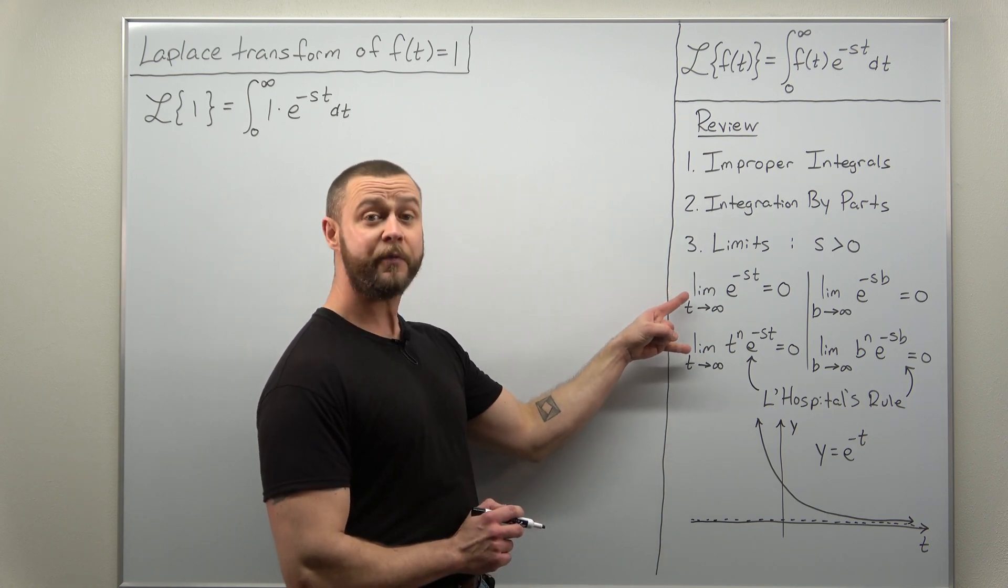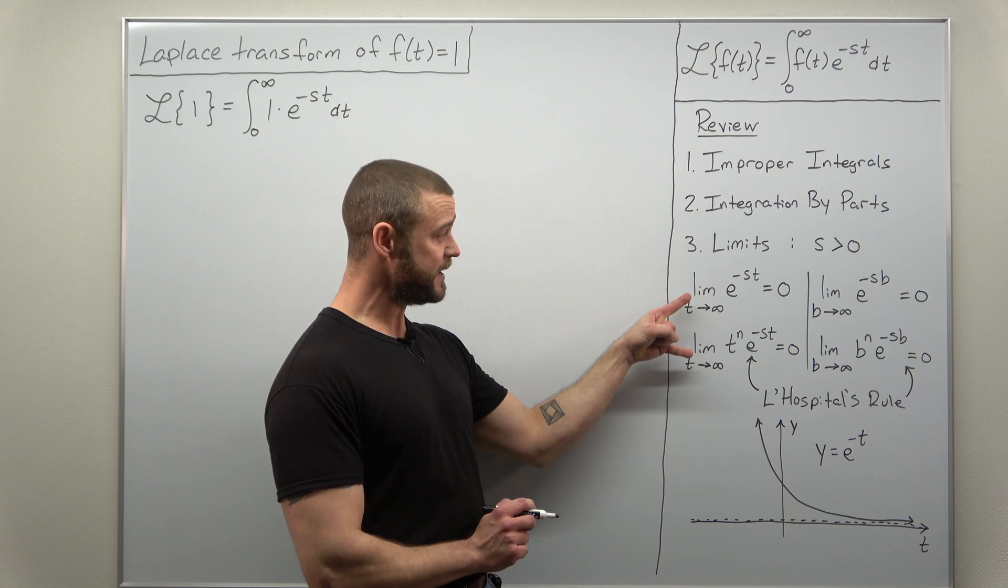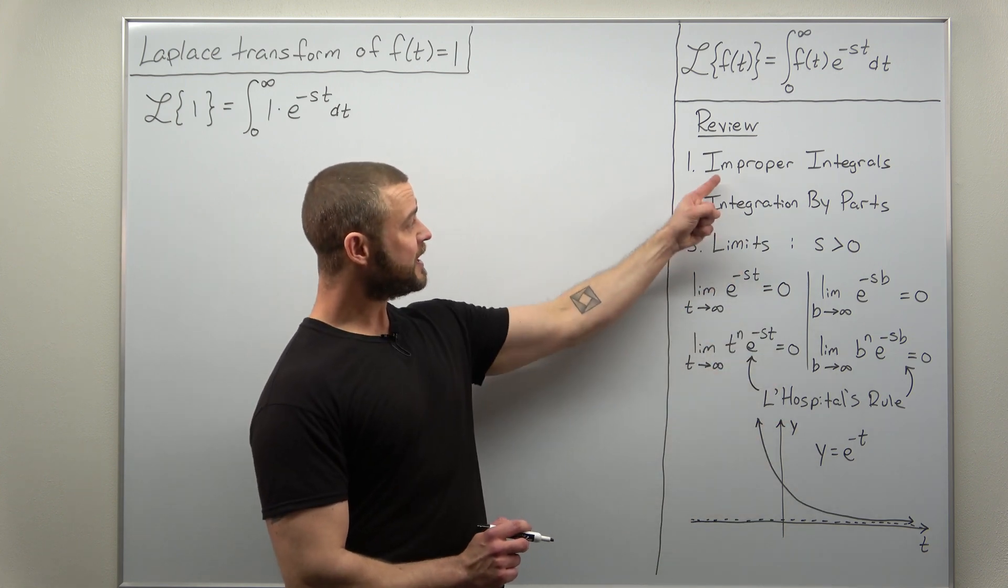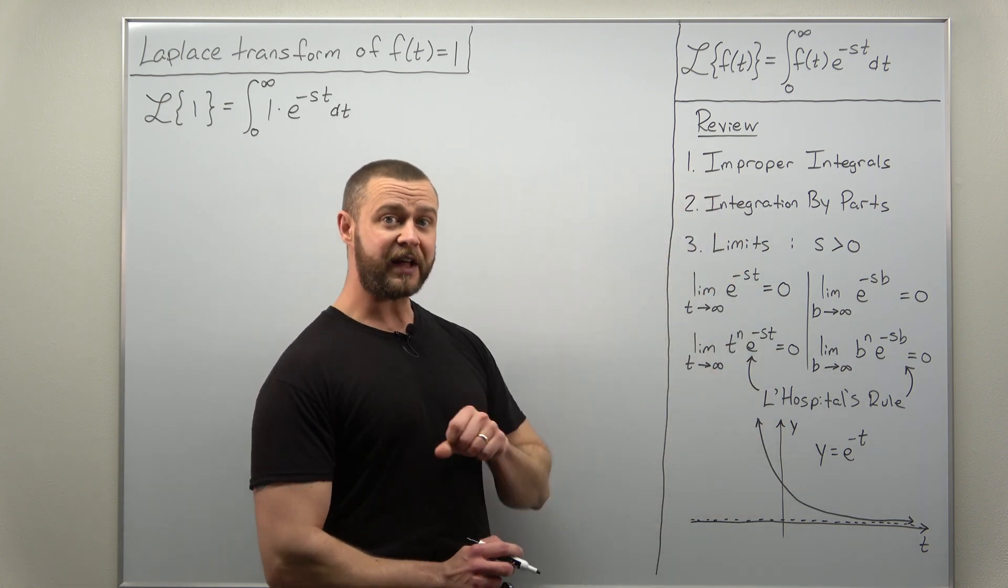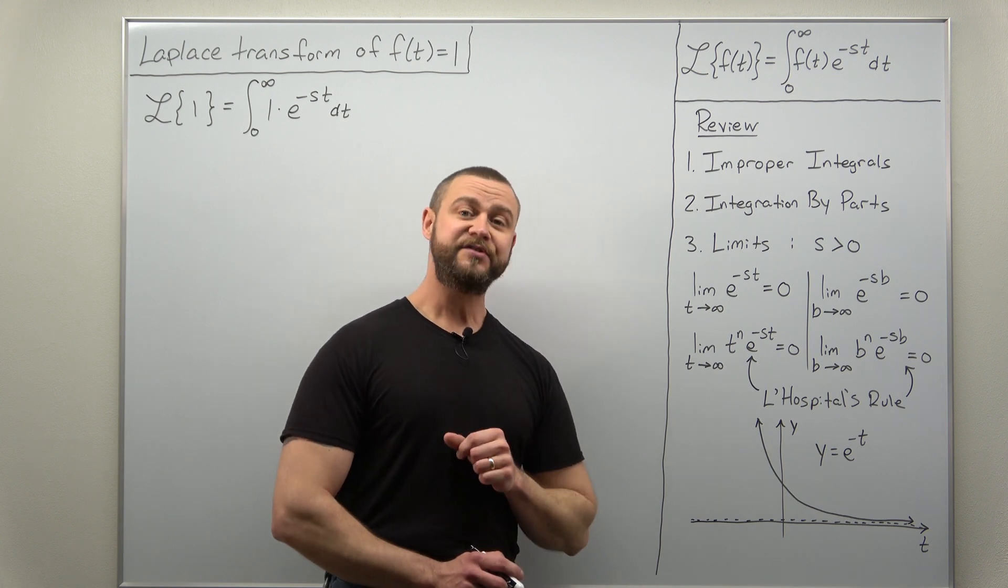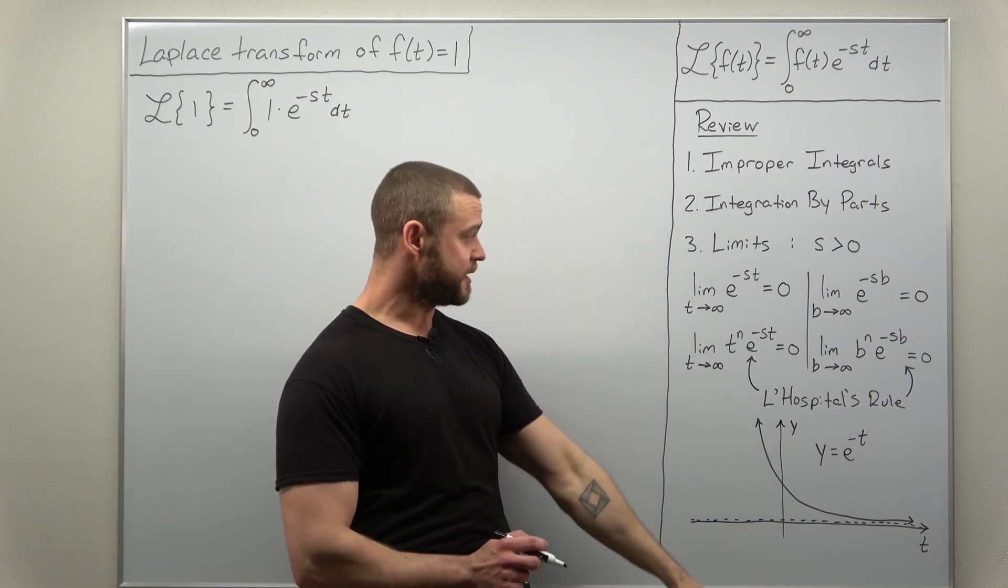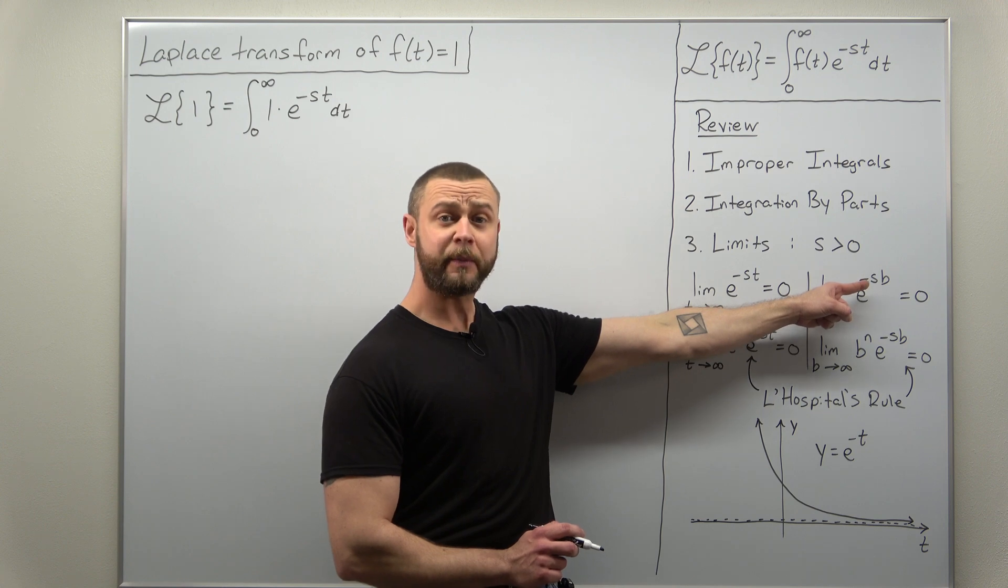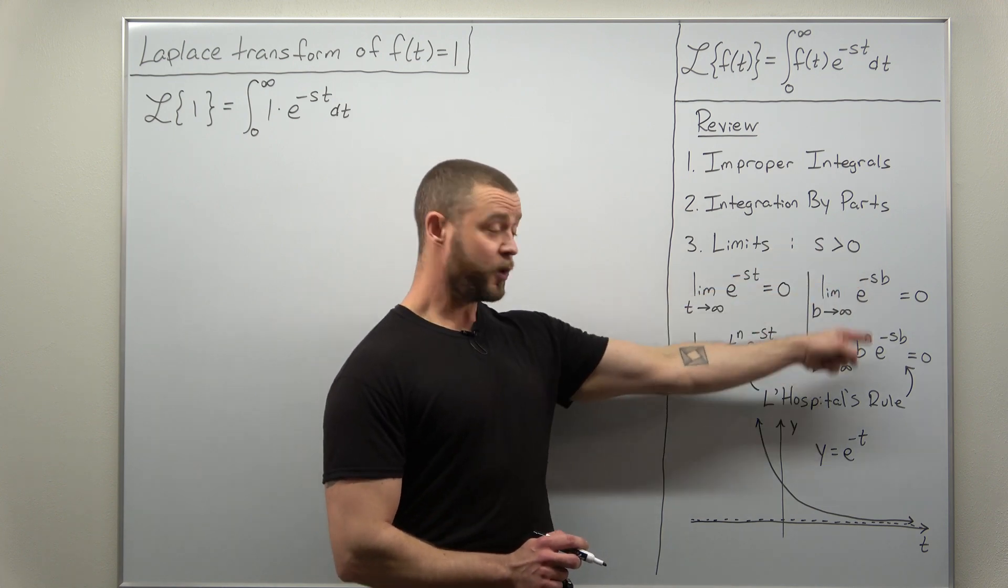Now first make sure you're comfortable with these limits involving the variable t. Since we're going to be setting up our improper integrals as limits, we're going to set them up as a limit as b approaches infinity. Make sure you're comfortable just replacing t here with b.